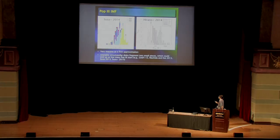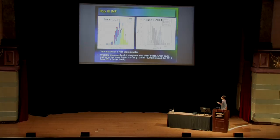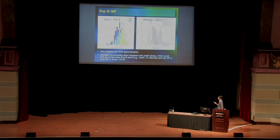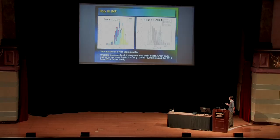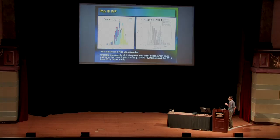There are some studies that simulate a large number of Pop 3 stars systematically by high-resolution numerical simulations. Such works show that the Pop 3 IMF has a typical mass of about 10 solar masses to a few thousand solar masses. This means the typical mass is very massive as a first approximation.